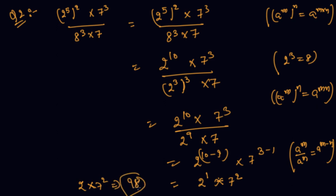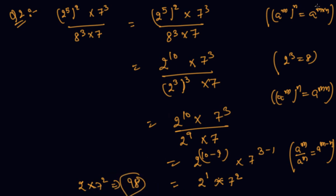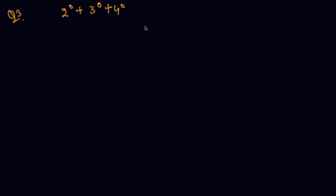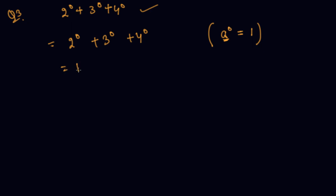I hope you can now easily attempt any question based on this. Let me discuss one more question — a simple question based on any exponent with zero power. The question is: find the value of 2 raised to power 0 plus 3 raised to power 0 plus 4 raised to power 0. Here I use the rule: any non-zero integer raised to power 0 equals 1, where the base should not be equal to 0. So this is 1 plus 1 plus 1, which equals 3.